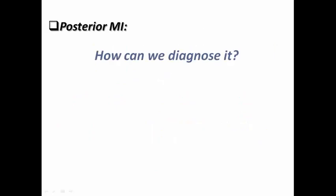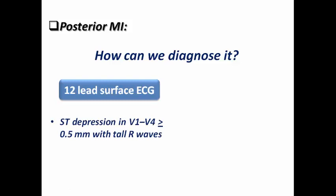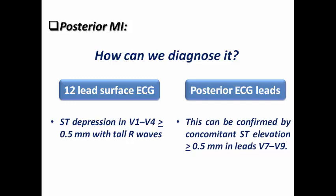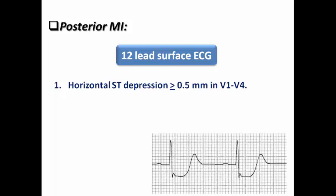How do we diagnose posterior MI? On the standard 12-lead surface ECG, we look for ST depression in V1 to V4 of more than or equal to 0.5 mm with tall R waves. This can be confirmed by the posterior ECG leads — presence of concomitant ST elevation of more than or equal to 0.5 mm in leads V7 to V9, which are called the posterior ECG leads.